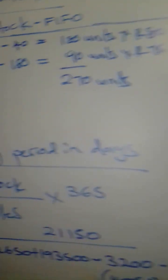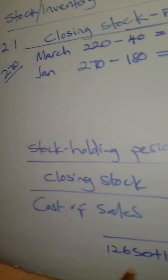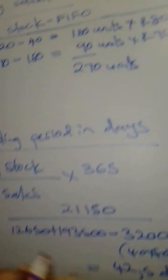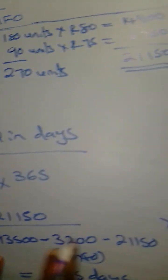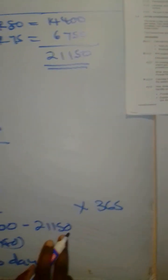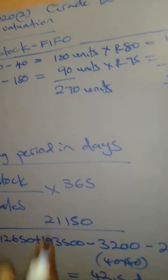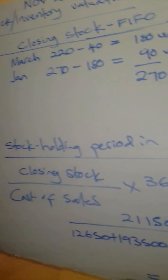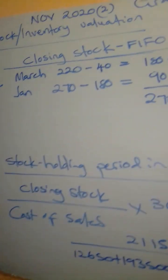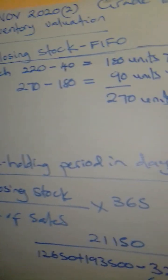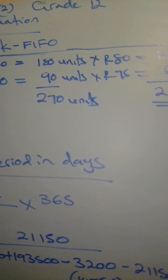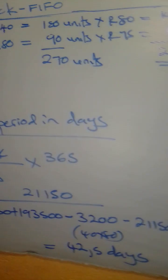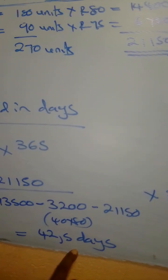This is the stock holding period in days. The calculation for cost of sales is: opening stock plus purchases minus returns minus closing stock — this gives us the cost of sales. So we are done with question 4.2.1. Our closing stock is R21,150 and our stock holding period in days is 42.5 days.